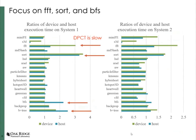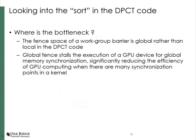Looking closely at the two figures, we can see that there are four kernels that perform poorly using DPCT on both systems: FFT, SORT, BFS, and B+tree. I will look at these kernels to try to optimize them using DPCT. For the first one, SORT — which is from the Shoc benchmark — there are three static kernels in SORT.